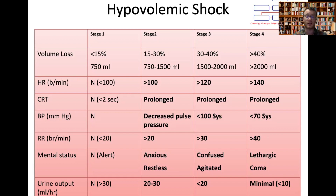Specifically for hypertensive patients, a drop to around 100-110 systolic should raise concern. The first real signs are that the respiratory rate goes up, the patient may be anxious, and there'll be a slight decrease in urine output. Stage three — losing over one and a half litres — brings very marked tachycardia, increasing prolongation of capillary refill time, blood pressure dipping below 100 systolic, marked tachypnoea, and patients may become confused and agitated.